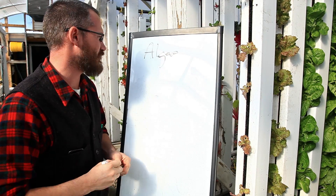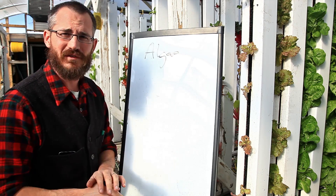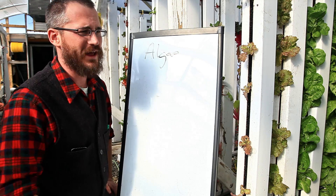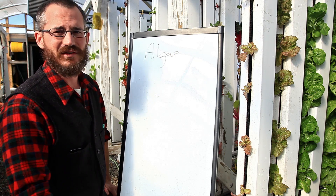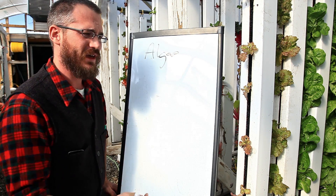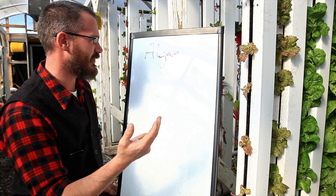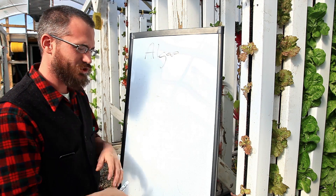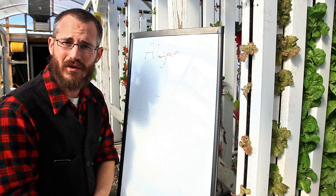Algae is a really interesting problem in aquaponic systems because it's an essential part of the ecology, so almost all aquaponic systems are going to have algae. Algae are basically little tiny plants that are growing and living in your water, floating around. They perform photosynthesis, so they need light to survive. They're fixing carbon dioxide and producing sugars and other compounds that they use to divide and grow more of themselves.